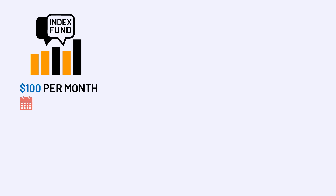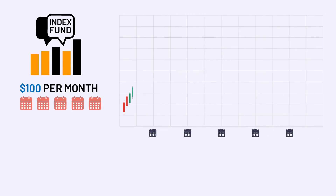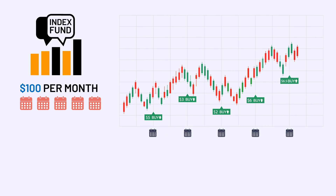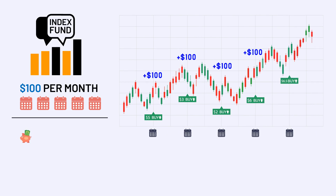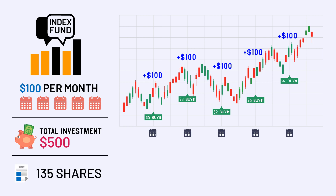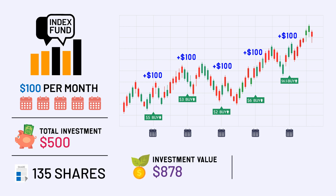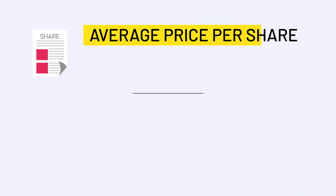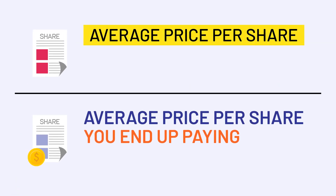To get a better understanding of how dollar cost averaging works, we'll work through a hypothetical example. Say that you invest $100 per month into an index fund for five months. As share prices vary at each interval, you receive a different amount of shares each time. After making monthly contributions of equal amounts, your total investment after five months is $500, with 135 shares. At the end of the period, the investment value is $878, meaning you would have profited $378.